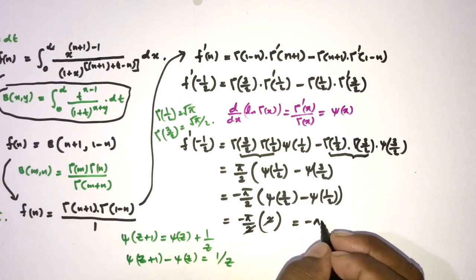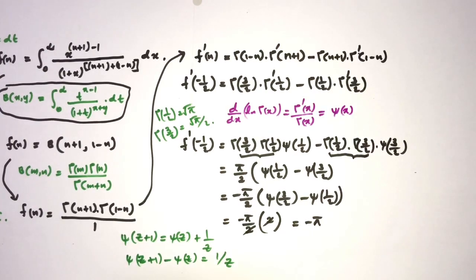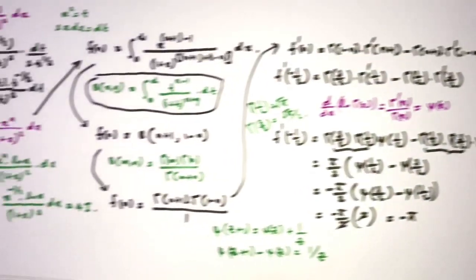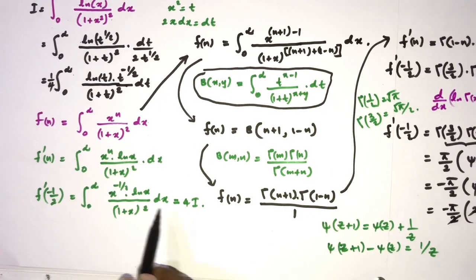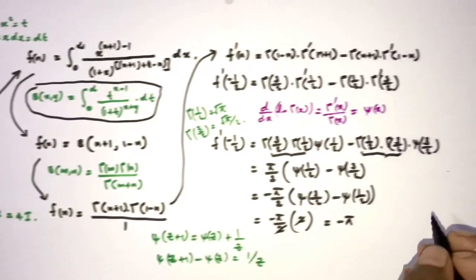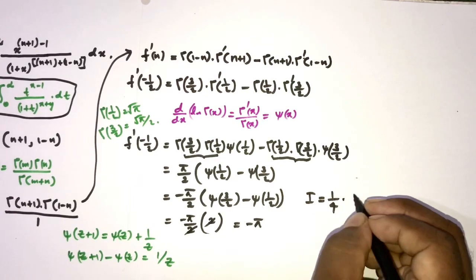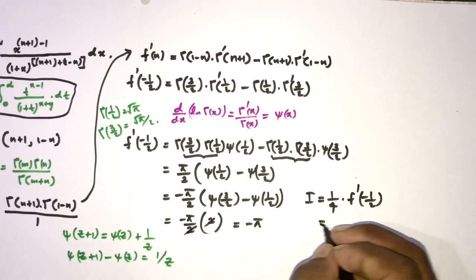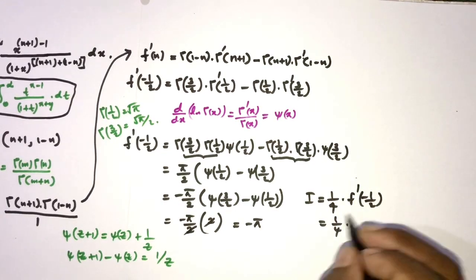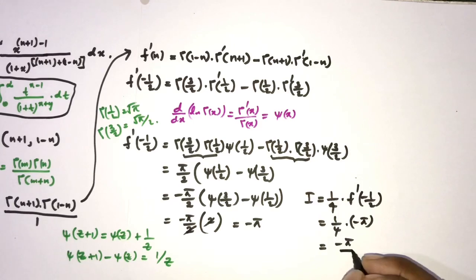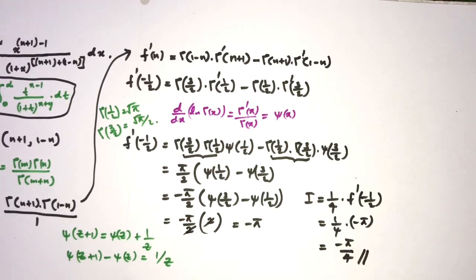We have the relation f'(−1/2) equals 4I, so we can isolate I: I equals (1/4) times f'(−1/2) equals (1/4) times (−π), giving the answer I equals −π/4. If you like this type of video, please subscribe to this channel. Thank you for watching.